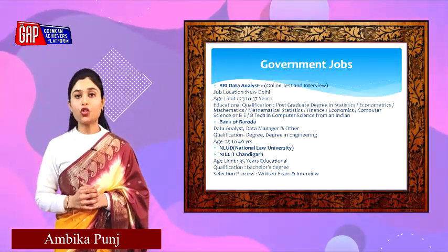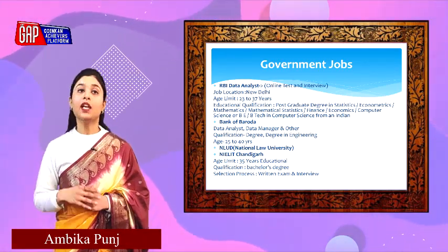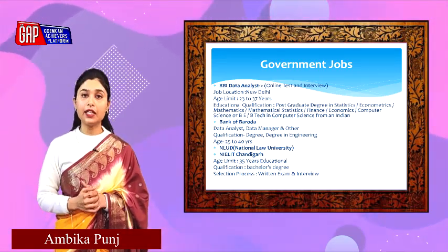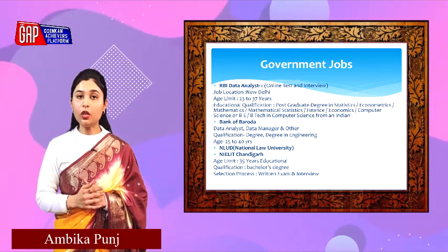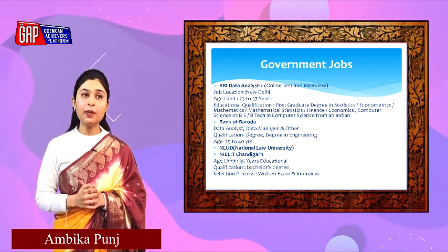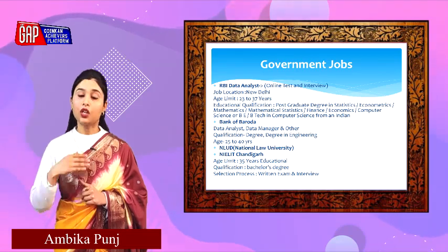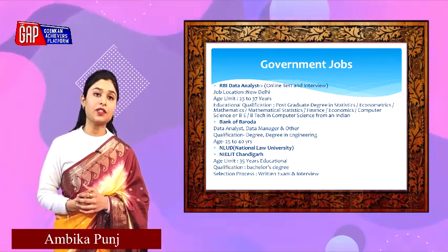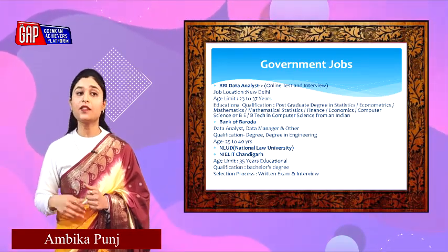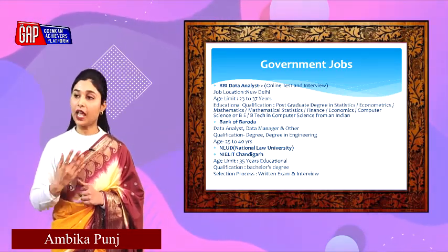Now let us talk about jobs. There are both government as well as private job opportunities. Starting with government jobs: first is RBI as a data analyst, with a job location in New Delhi. The selection process involves an interview plus an online test. The age limit is 23 to 37 years. Educational qualification required is a post-graduate degree in statistics, economics, mathematics, mathematical statistics, finance, computer science, or alternatively a BE/B.Tech in computer science.